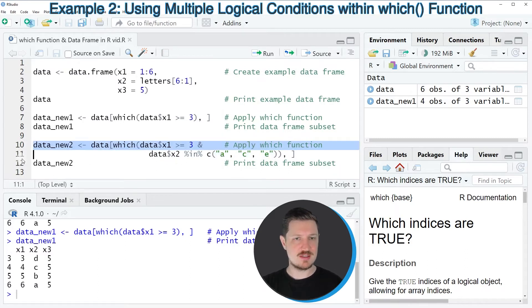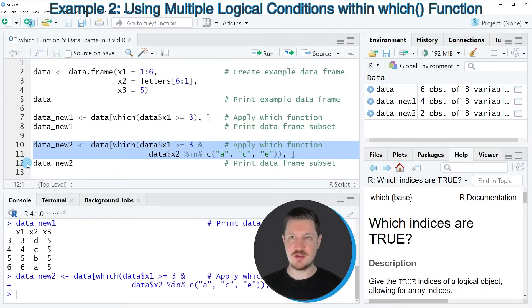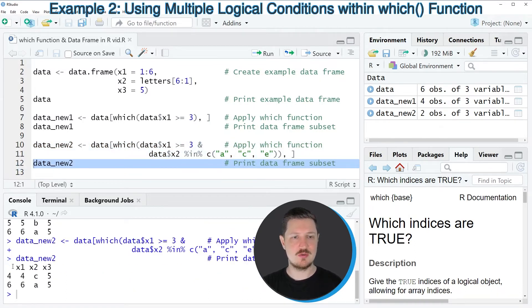So after running lines 10 and 11 of the code, another data set called data_new2 is appearing at the top right, and we can print this data set to the RStudio console as well. Then you can see that we have extracted certain rows from our data frame based on multiple logical conditions using the which function.